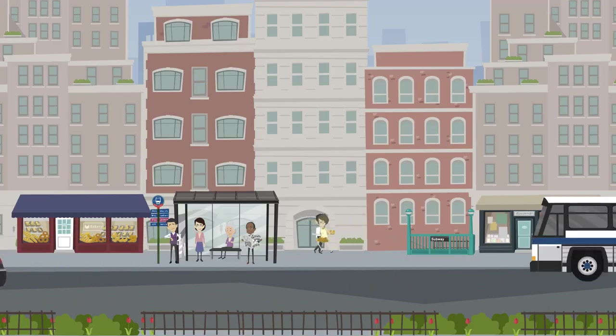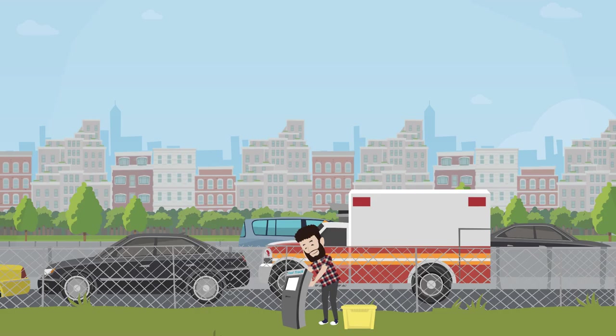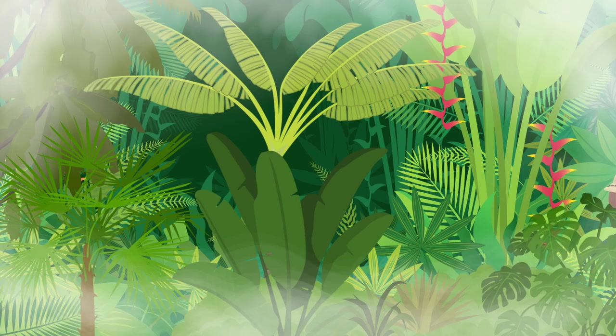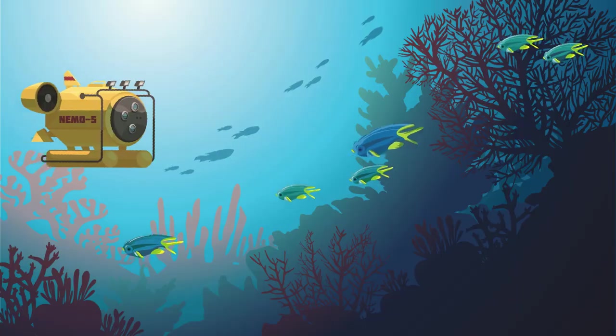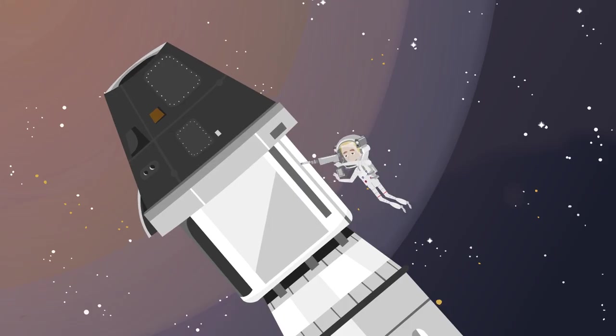For example, some scientists work in cities studying biodiversity or pollution. Others study public transport to help improve them. Some also work in more exotic places, such as in rainforests, caves, jungles, under the sea or on top of volcanoes. They can even work in space.